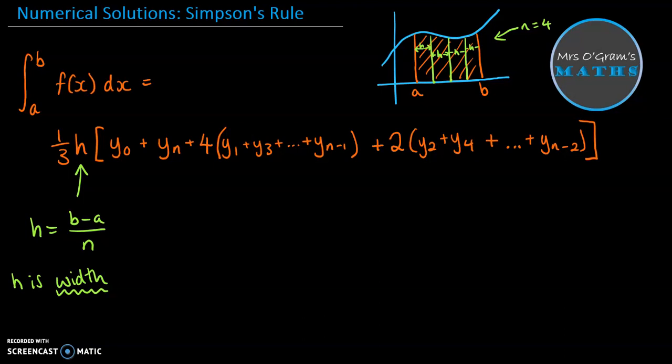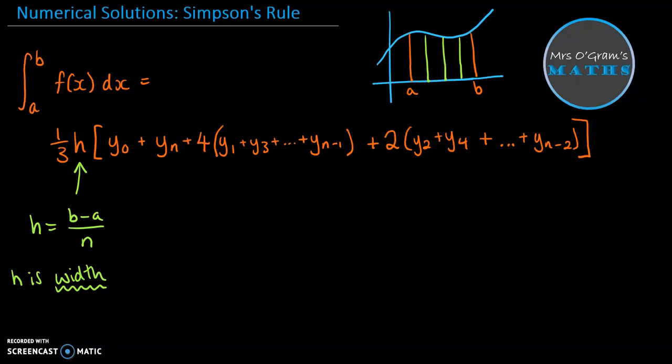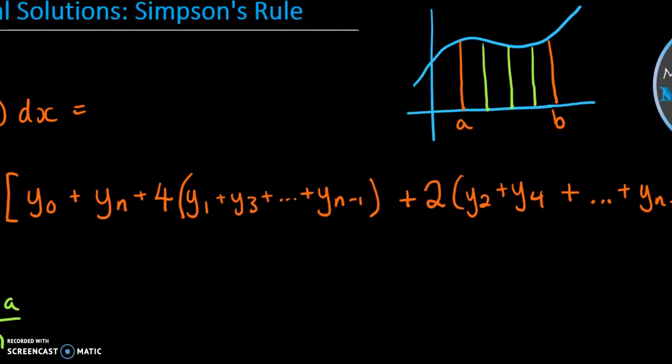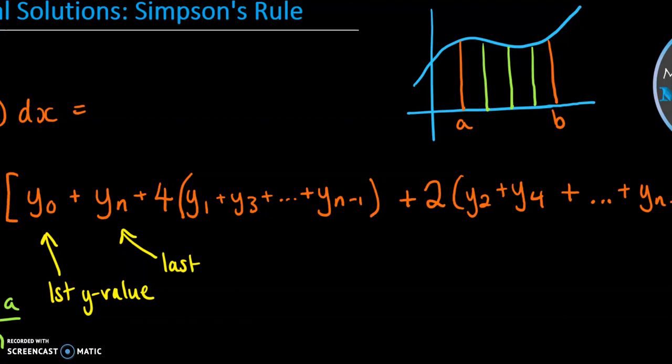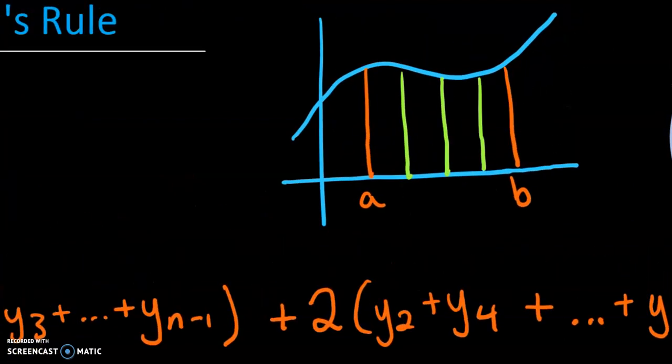What are all these Y values in here that we've got going on? Let's just break those down. The Y zero is the first Y value and the Y N is the last one. So we have Y zero is the length of this first left-hand side of that first strip, and Y N is the length of this right-hand strip.